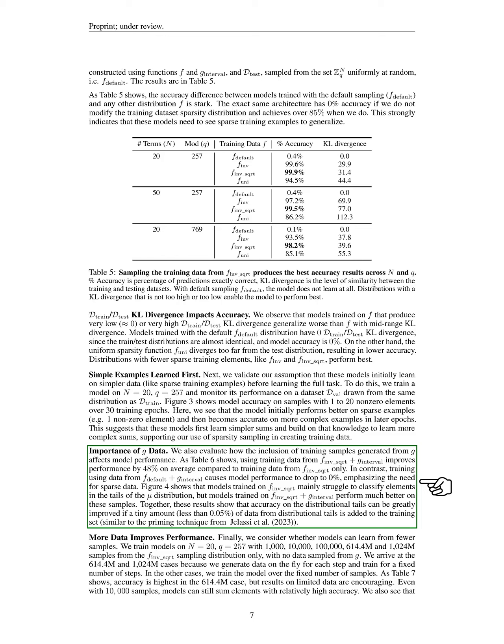Finally, we explore whether models can learn effectively from fewer samples. We train models with varying sample sizes from a specific sparse distribution and find that accuracy peaks at a certain number of samples. Even with a limited dataset, models can still achieve relatively high accuracy. Interestingly, having too many samples can actually decrease performance. We decide to use the optimal sample size for our subsequent experiments.